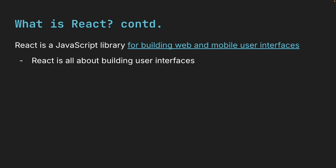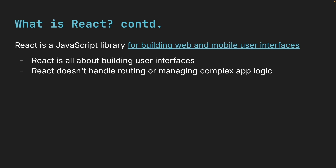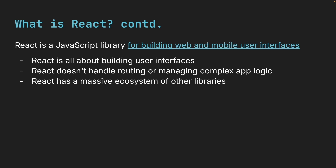React is all about building user interfaces — the parts of websites and apps that users see and interact with, like buttons, forms, menus, and everything else that appears on your screen. React deliberately doesn't try to handle other aspects of application development, like routing, which is moving between different pages, or managing complex application logic. It stays focused on just the user interfaces. But that shouldn't worry you, because React has a massive ecosystem of other libraries that work perfectly with it. When you need those other features, you can easily plug in the right tools for those jobs.